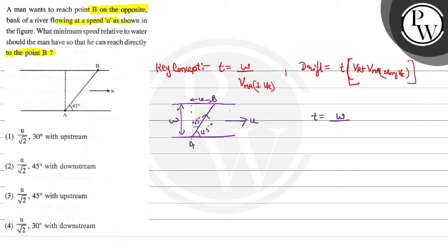Let's suppose that my VMR is V dash. If VMR is V, I have to go directly. What minimum speed relative to water should the man have so that he can reach directly to point B? If the speed is minimum, it will be directly to point B.